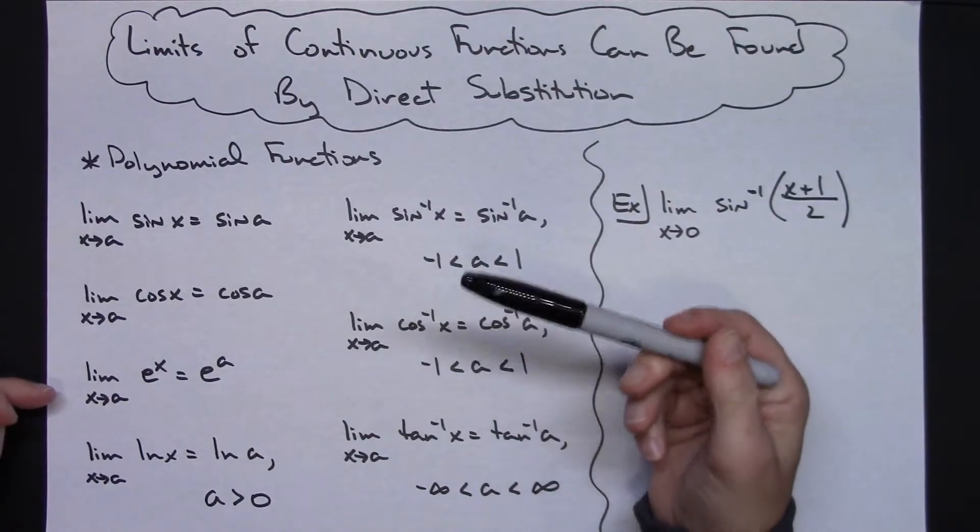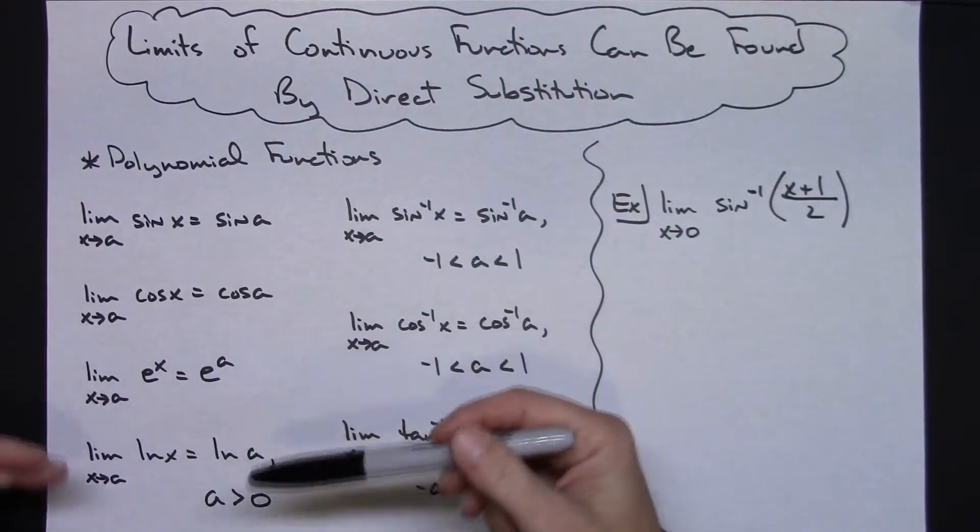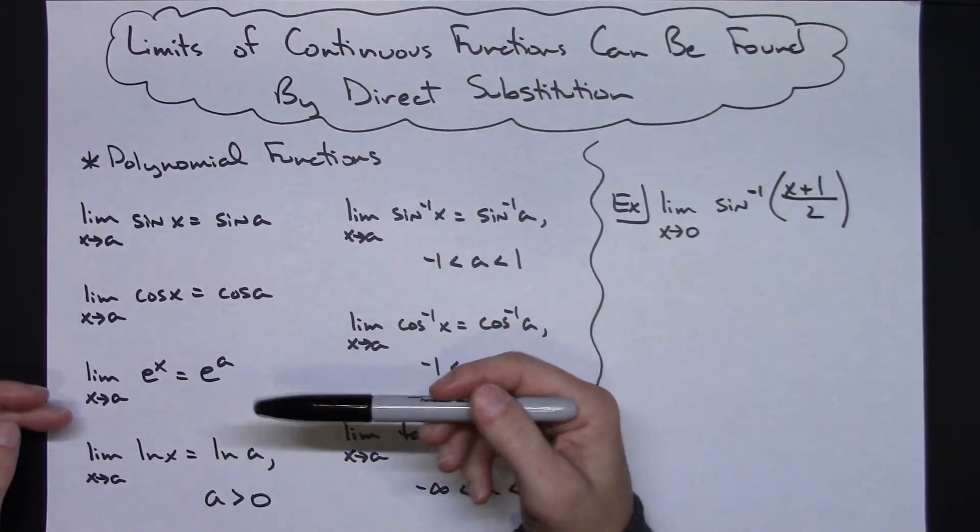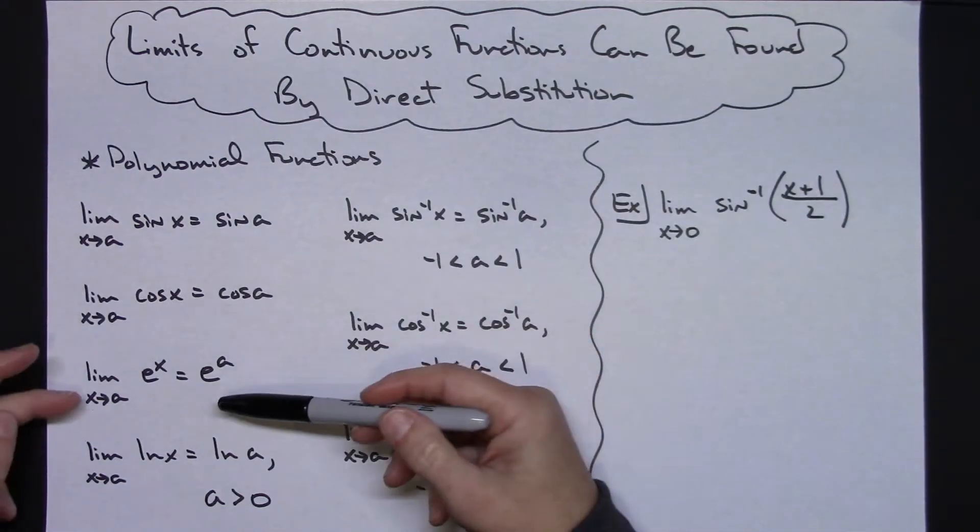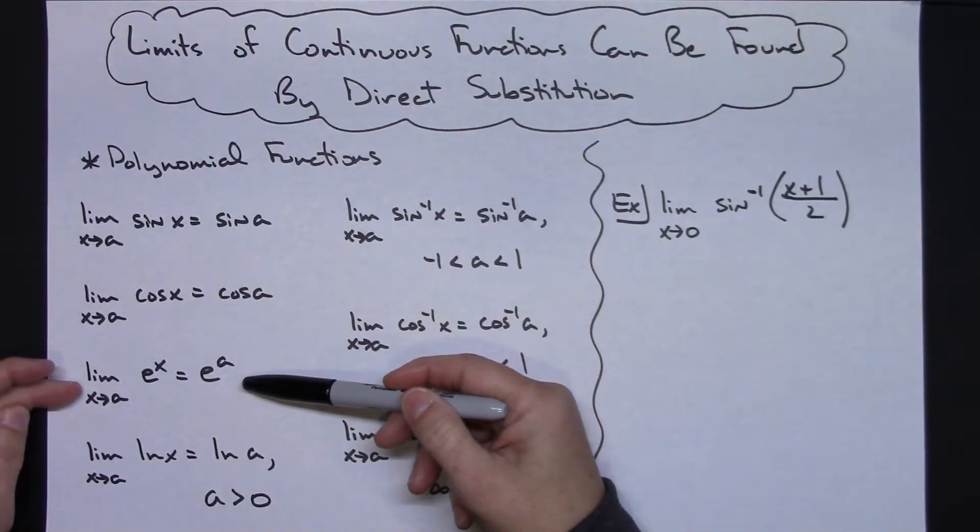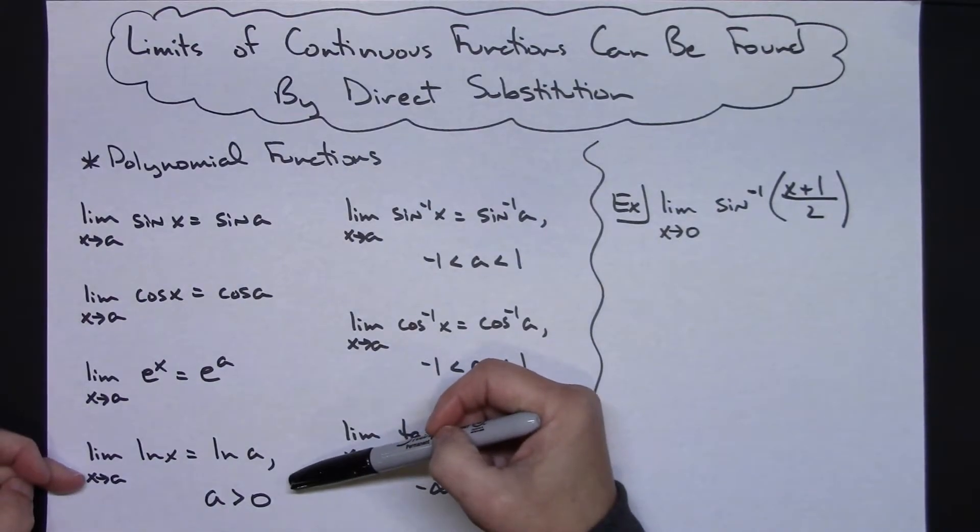If you are in an early transcendental calculus class where they're introducing those transcendental functions as early as chapter one with your limits, then e to the x is a continuous function, so a direct substitution will work there as well, and with the natural log function.